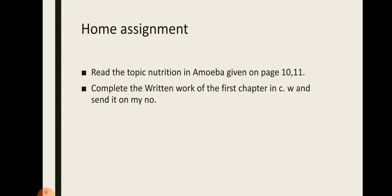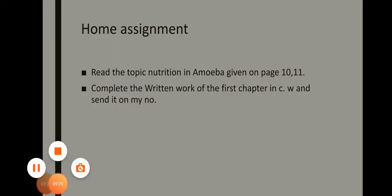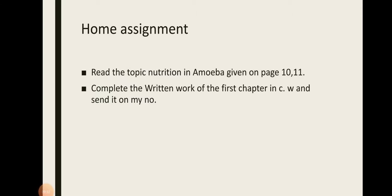So today we studied about the five steps of nutrition. In coming classes next week we are going to study each step in detail. The first step was ingestion — taking in food. The second step was digestion — breaking large food particles into smaller form, starting from the mouth through to the stomach. From the stomach, food enters the small intestine where complete digestion takes place, and all nutrients are absorbed by the walls of the small intestine and mixed into the blood.